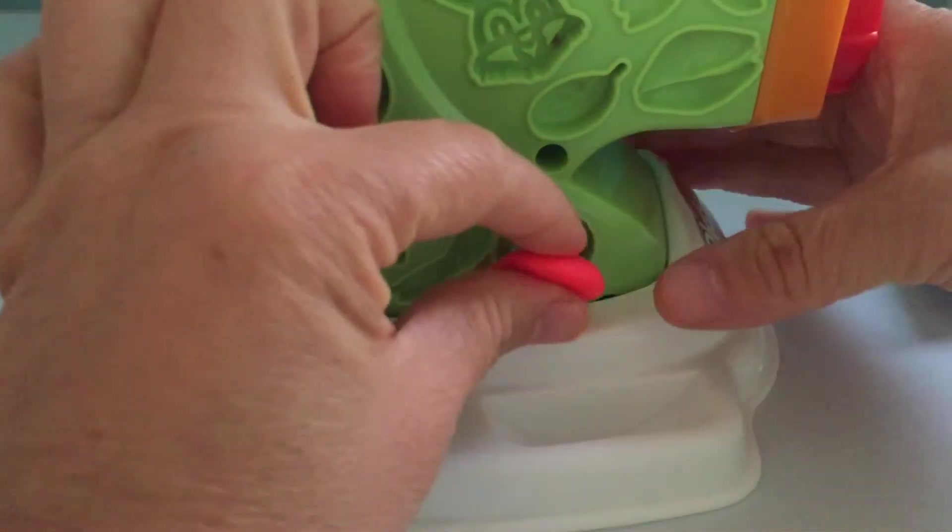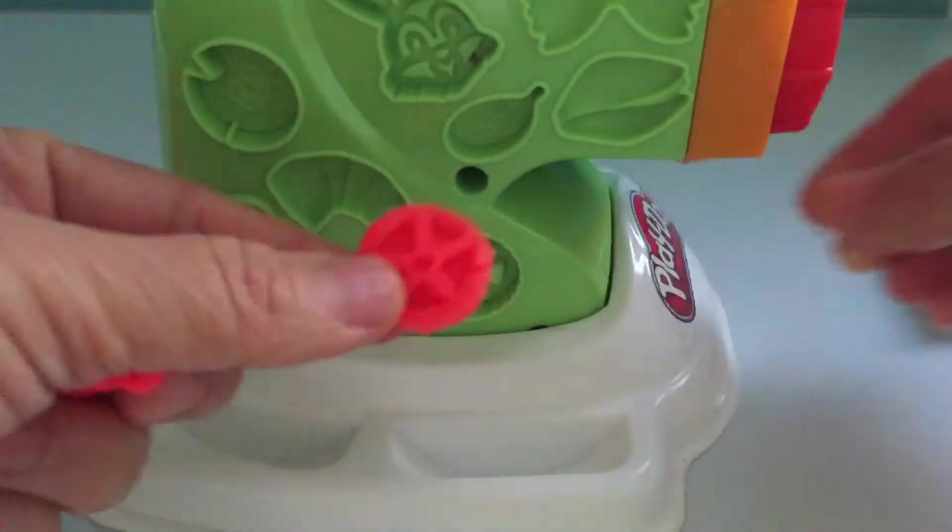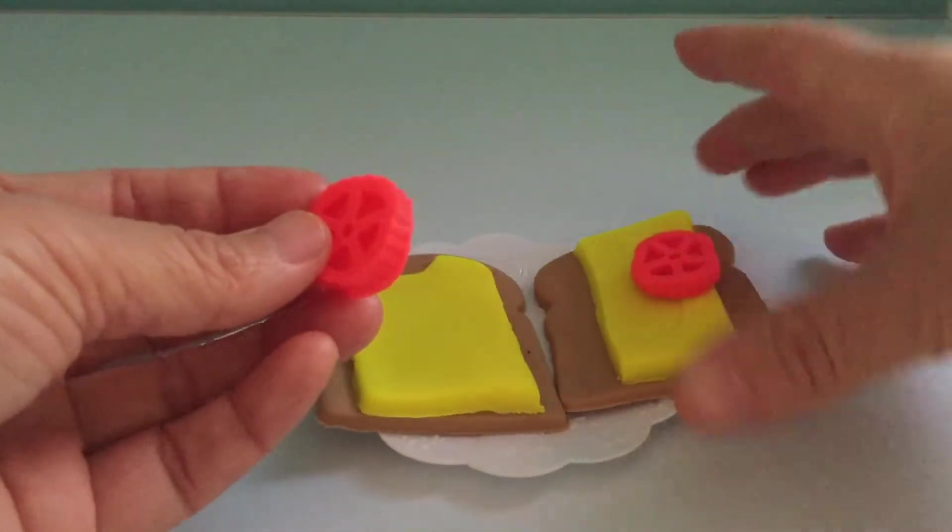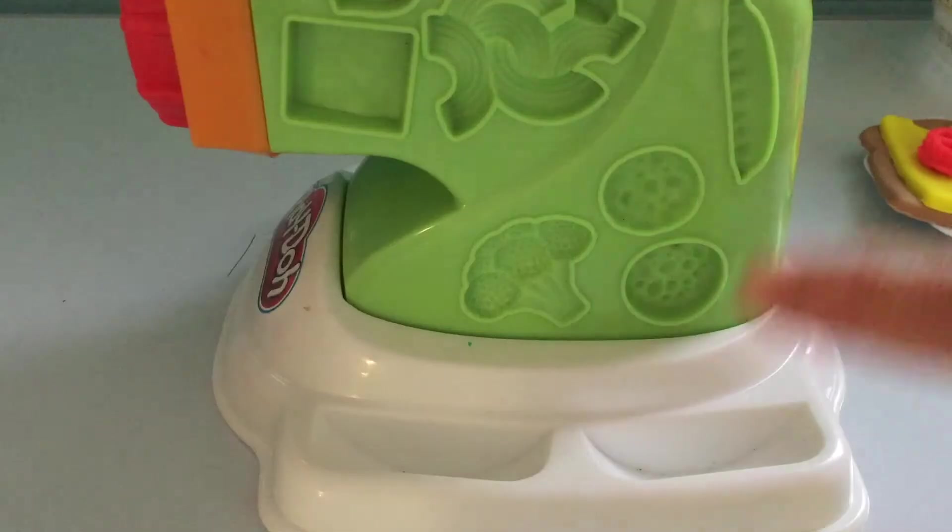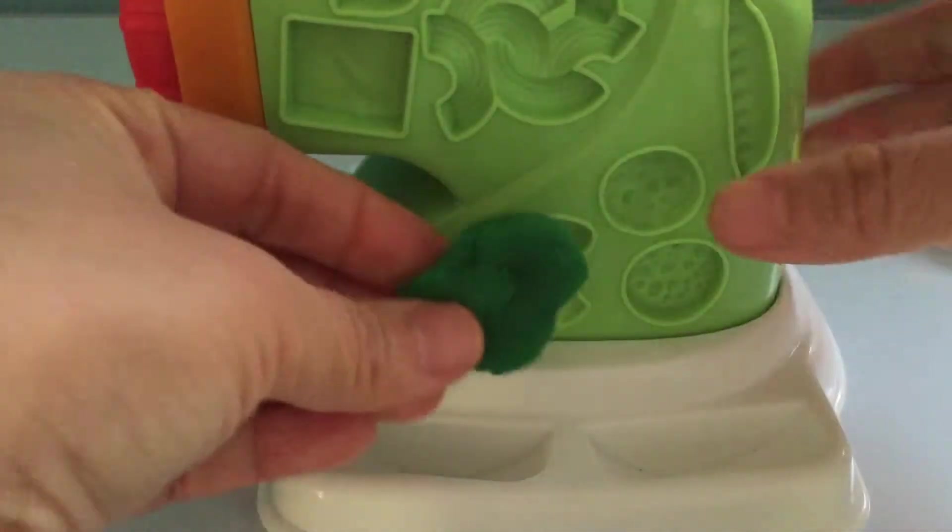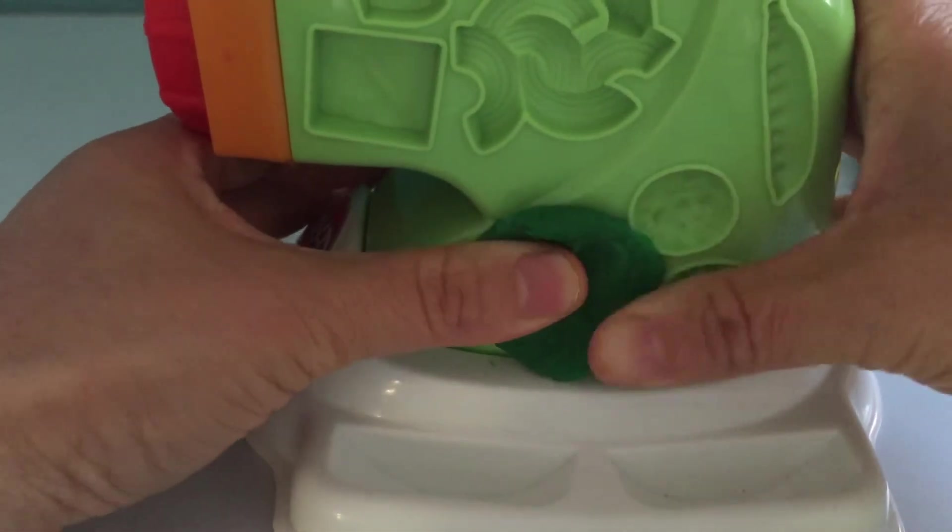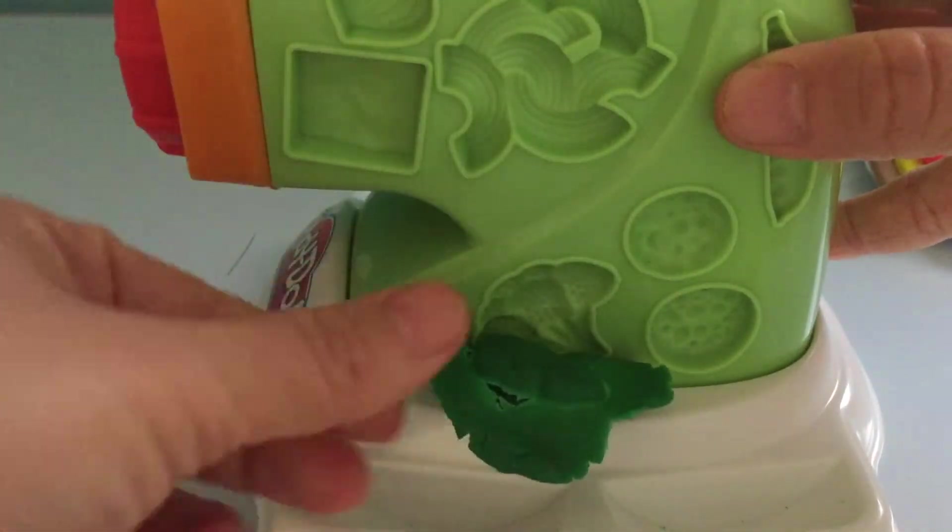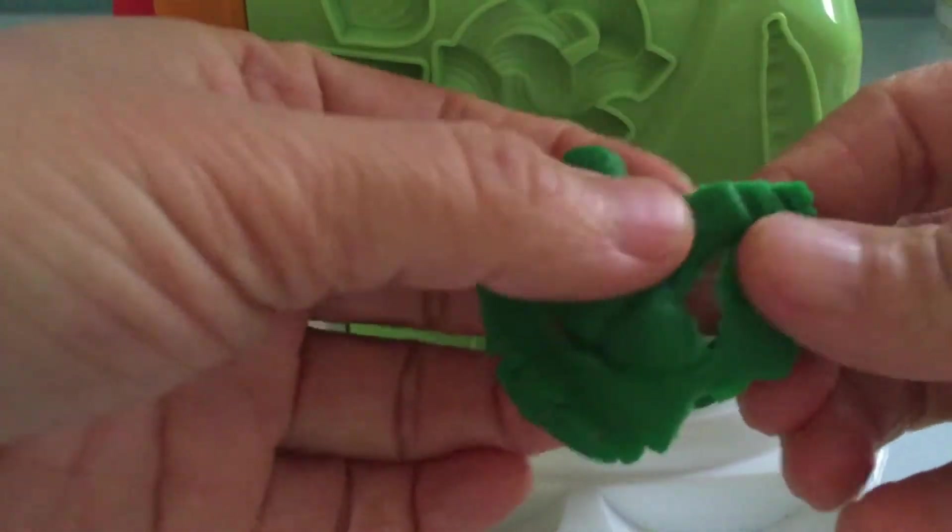We need a slice of red tomatoes. We got two slices of red tomatoes for the sandwich. We also need some green broccoli. We got one green cubed broccoli here.